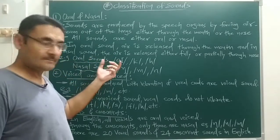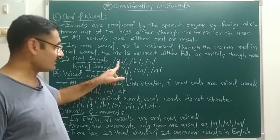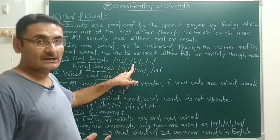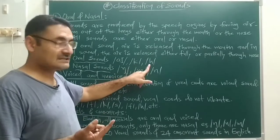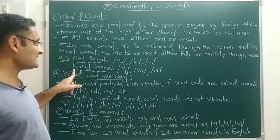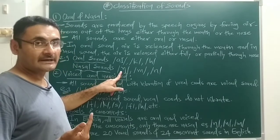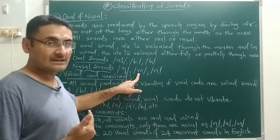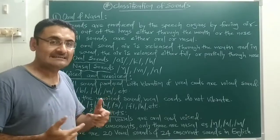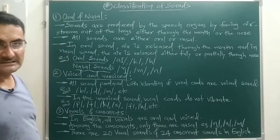For oral sound examples: sounds like 'a' are oral sounds — the air stream is released from your mouth. These are all oral sounds as the air stream exits through the mouth. For nasal sounds, the air stream is released fully or partially through your nose — examples include sounds like 'n' and 'm', where the stream is raised from your nose. So those are nasal sounds. That is the first type of sound classification: oral and nasal sounds.